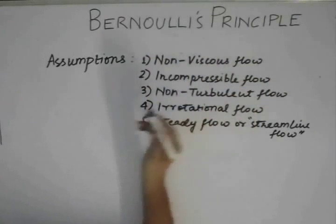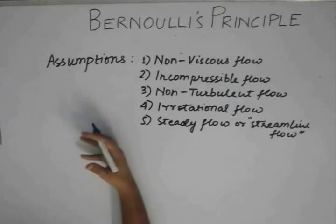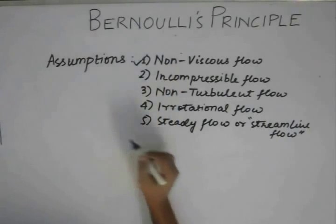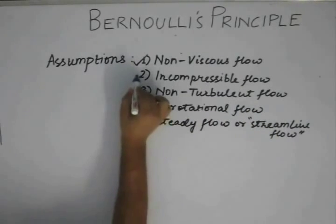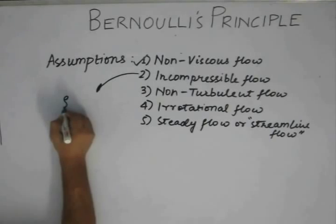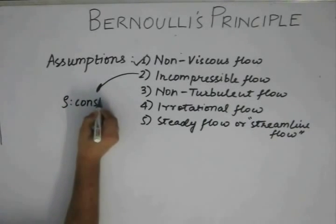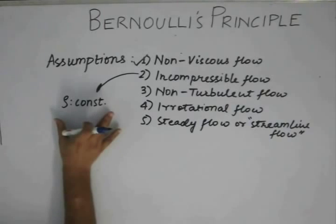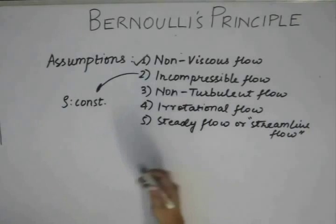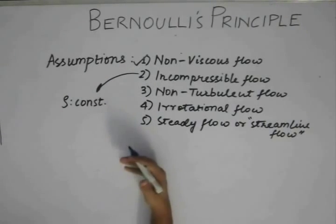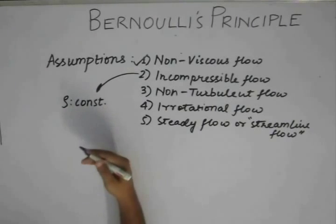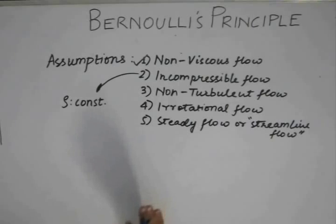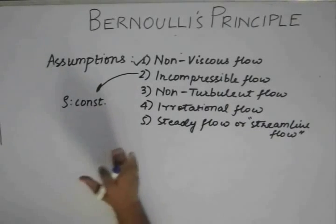For a non-viscous flow, viscosity or viscous effects in the fluid are absent, which means resistive forces or resistive impacts in the fluid are absent. Incompressible flow essentially means that the density of the fluid is constant. For our discussion, we are stating that the density of the fluid is constant. In general, when you study this topic at an engineering or higher level, you will find that constant density is not strictly the only criterion for incompressible flow — there are many other things to consider.